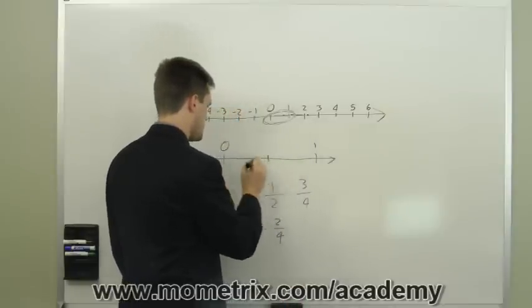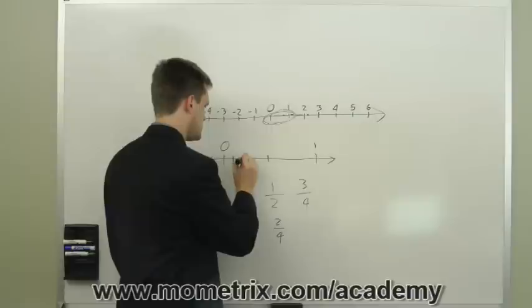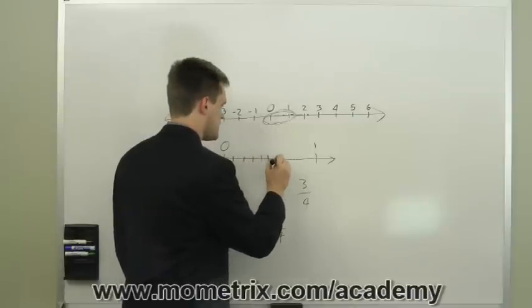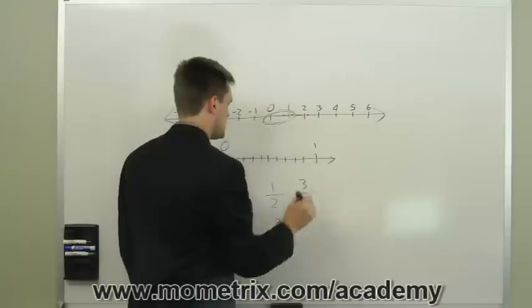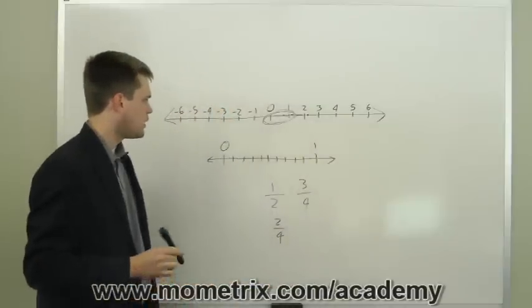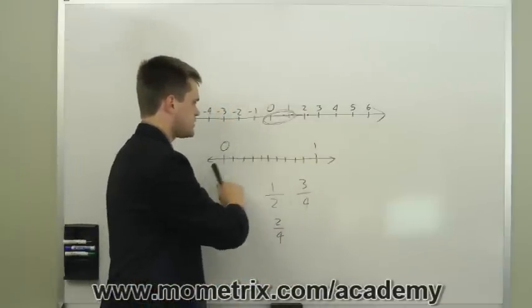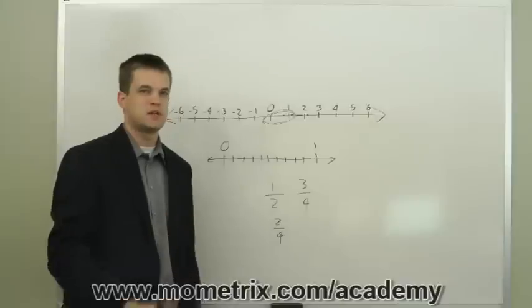We've got five from here to here, one, two, three, four, five, and then six, seven, eight, nine, and ten. You've got the space between zero and one divided up into ten parts.